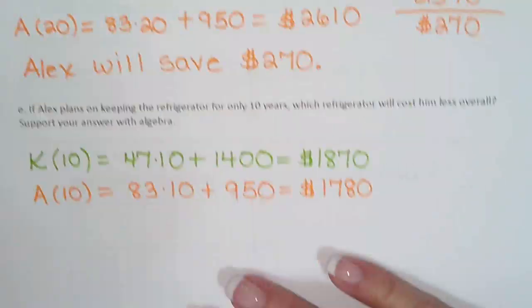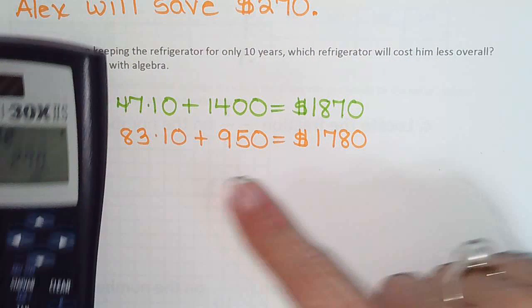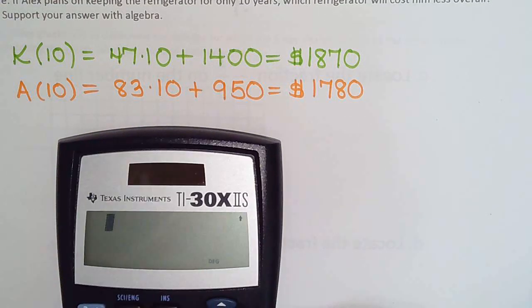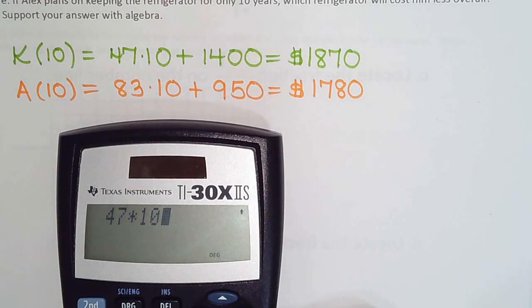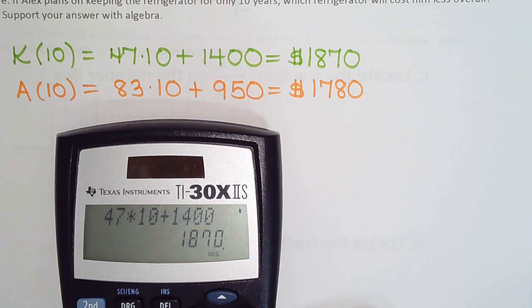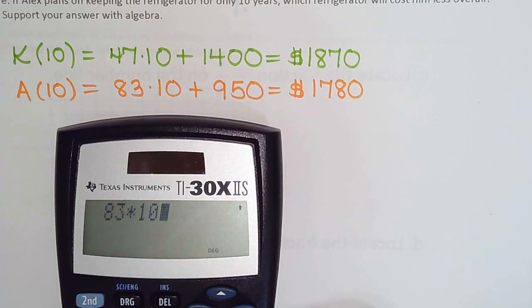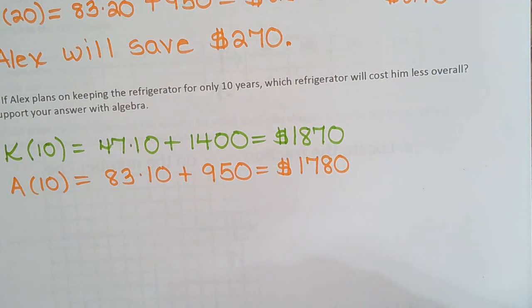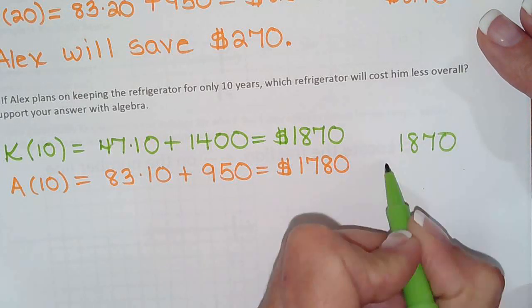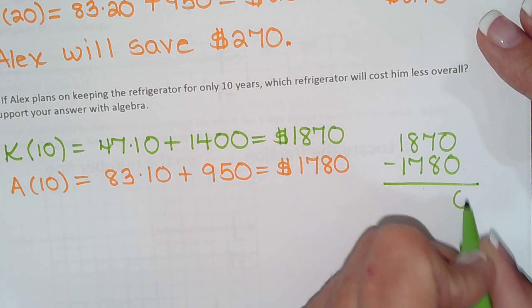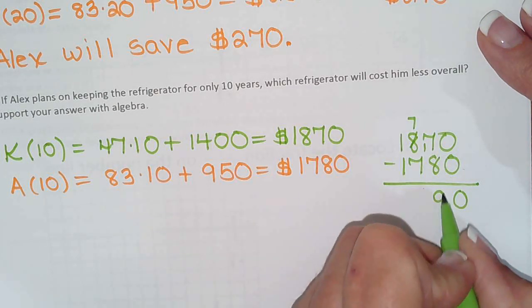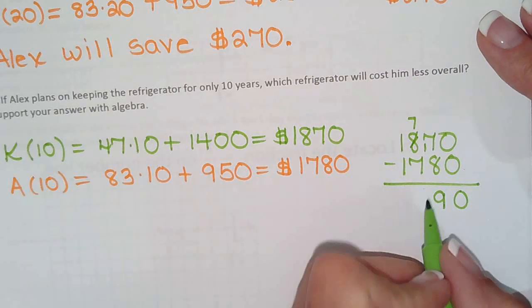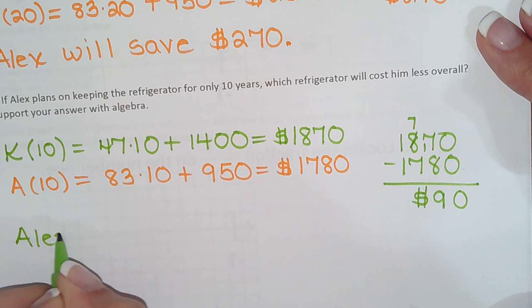So we have 47 times 10 plus $1,400. Yep, $1,870. Brain's still functioning. 83 times 10 plus $950. Boom, $1,780. So how much will he save? So $1,870 minus $1,780. That's $90. We'll verify it. $1,870 minus $1,780 equals $90. So Alex will save $90.